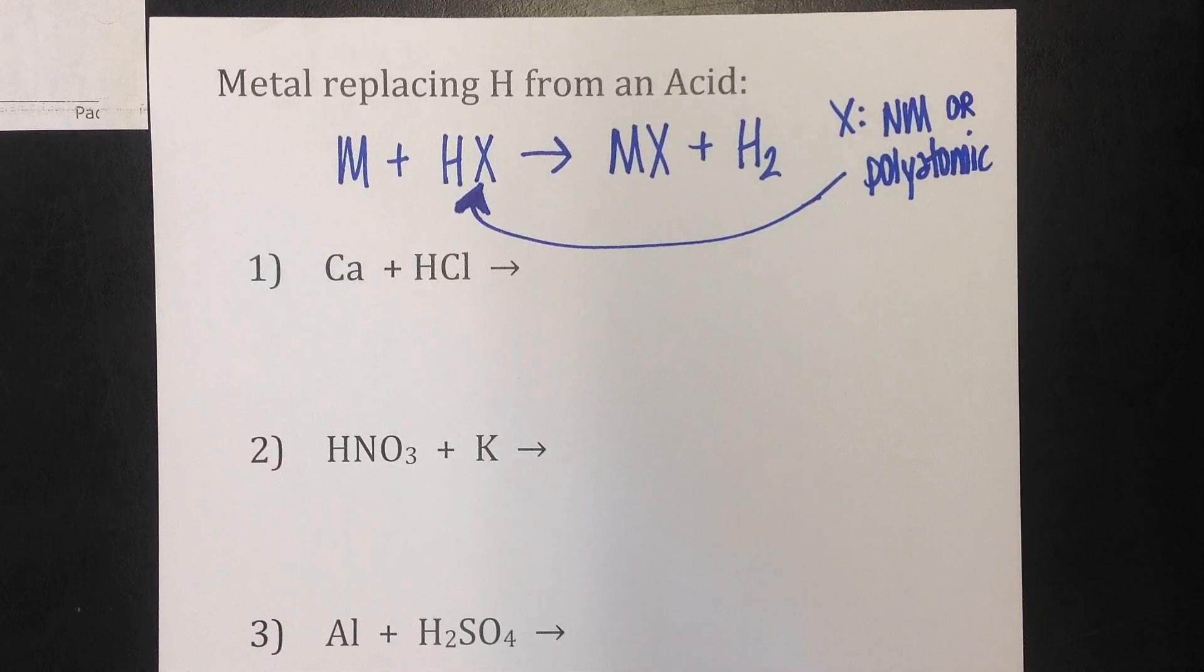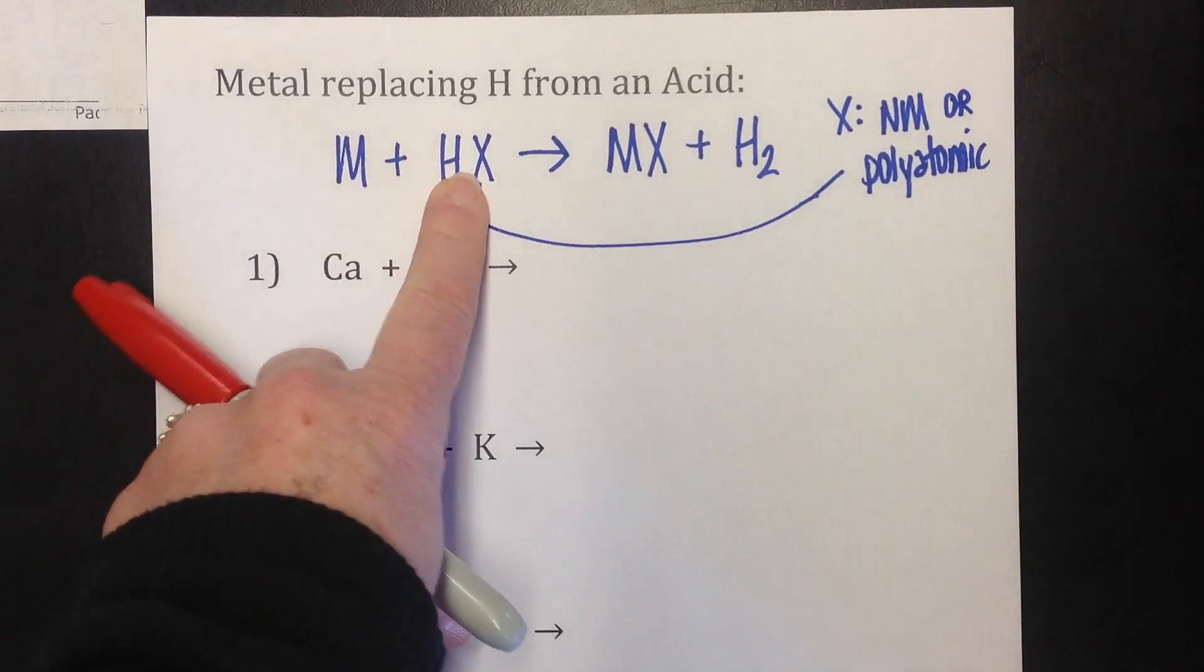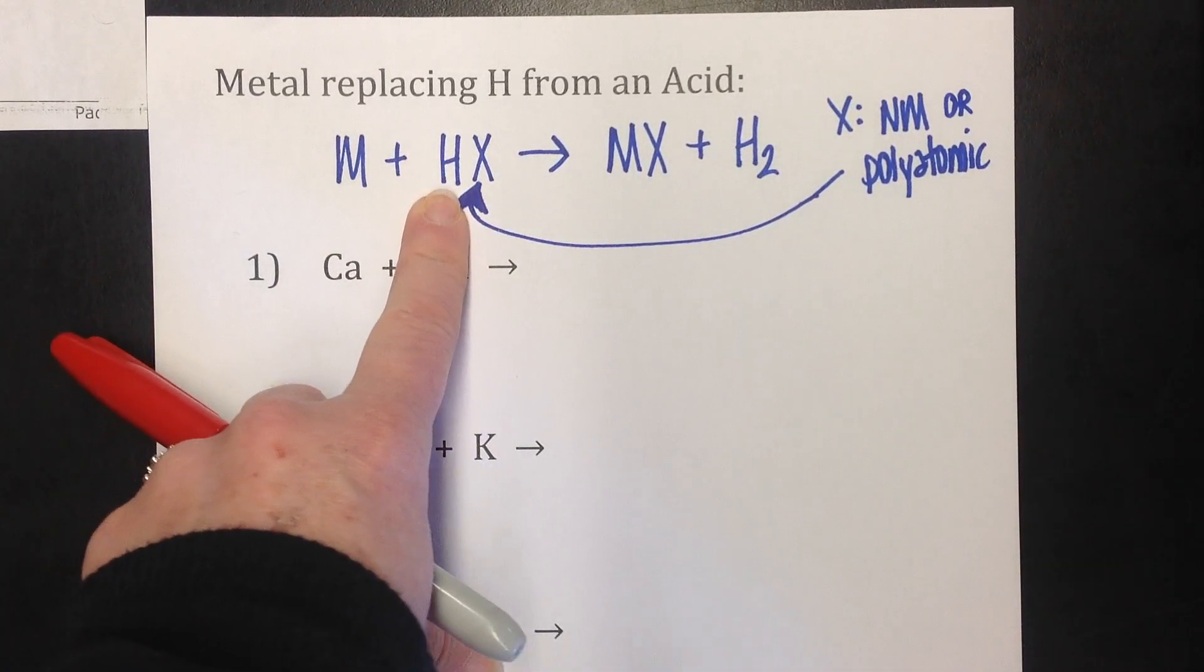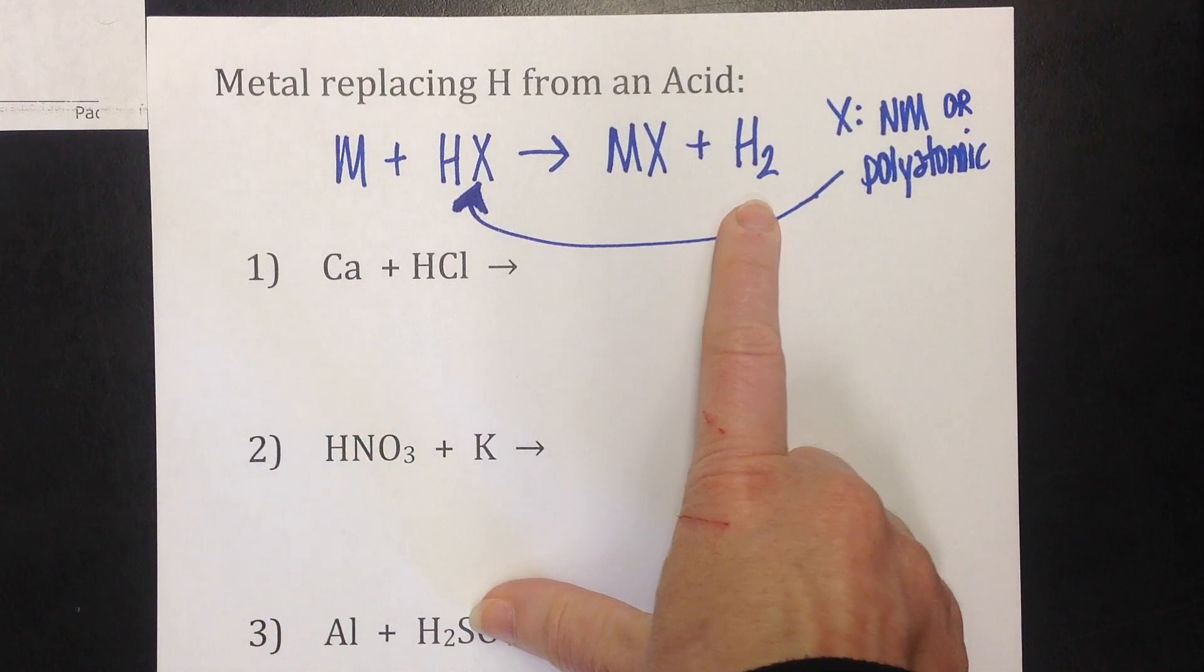So this is going to be a real short video and just consider this as the second single replacement reaction video. When you put a metal, an active metal with acid, sometimes the metal will kick the hydrogen out of the acid, leaving you with hydrogen gas because remember that's diatomic.